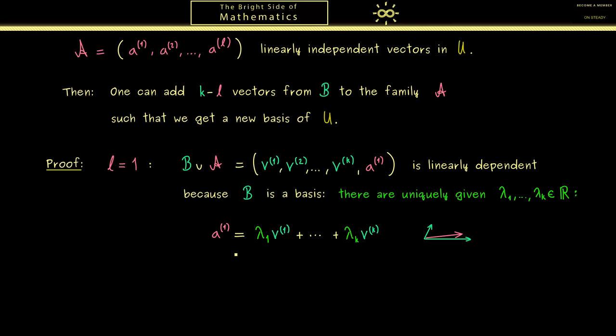Moreover, we know that the family A is linearly independent, which means a^1 is not equal to the zero vector. So we can conclude that not all the coefficients are equal to zero. Therefore, let's choose a lambda_j which is not equal to zero. And this now means we can divide by this coefficient on both sides. And therefore, we can bring the vector v^j to the left-hand side. And then we also get a linear combination for this vector. If we write it down, it looks a little bit more complicated than before. But essentially, it's the same length as before because we omitted the jth entry here and we subtracted a^1 here.